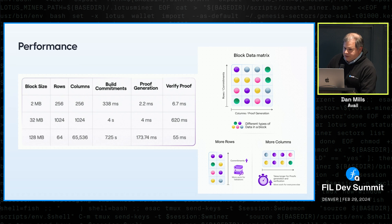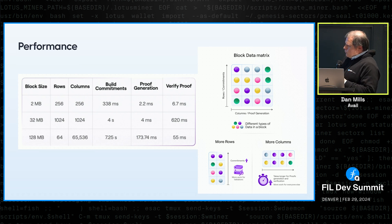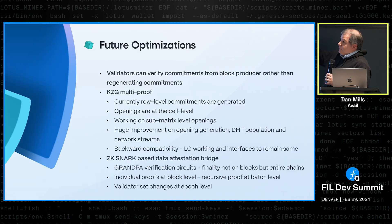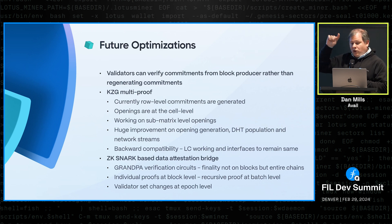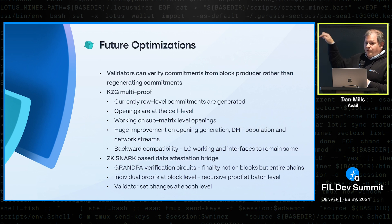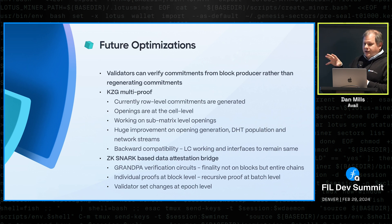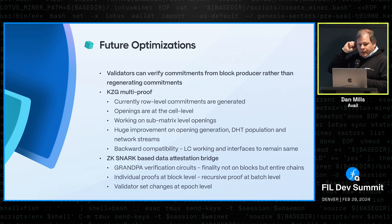In the future, we have low-level optimizations planned — things like KZG multi-proofs, which is the ability to get a proof for a region of a block. We lay out data as a matrix and currently sample individual cells, but it's also possible to get a proof for a whole region, which can be useful for applications storing a lot of data in a block who want to verify all of their data in one go. This will also allow for bigger blocks.